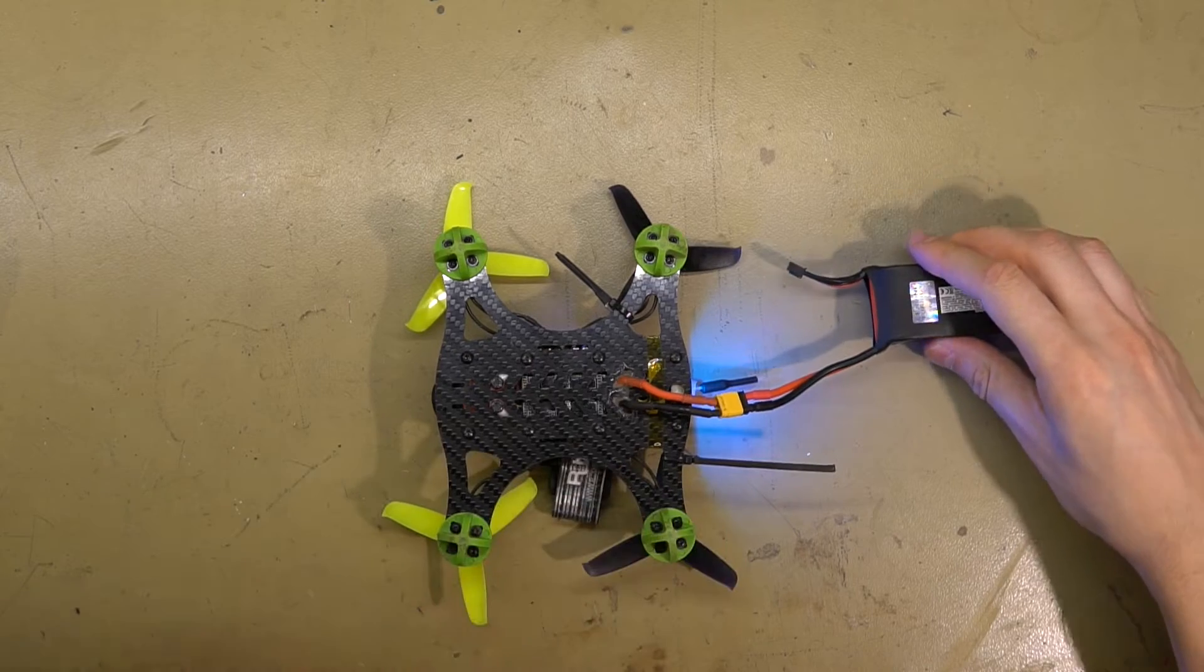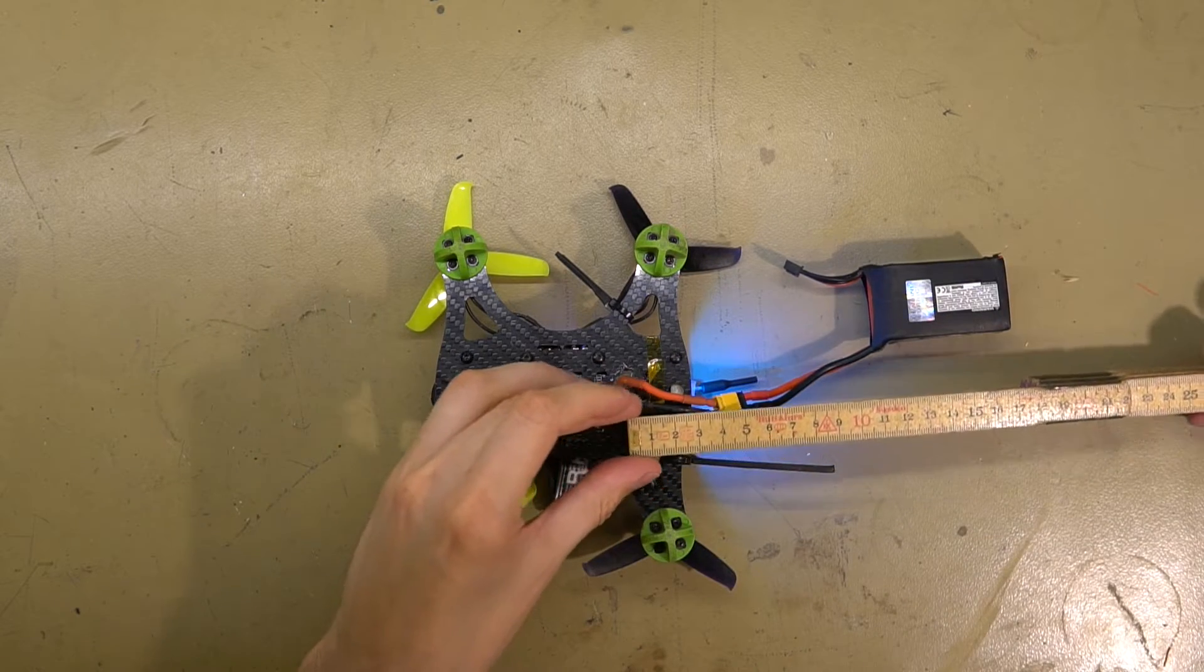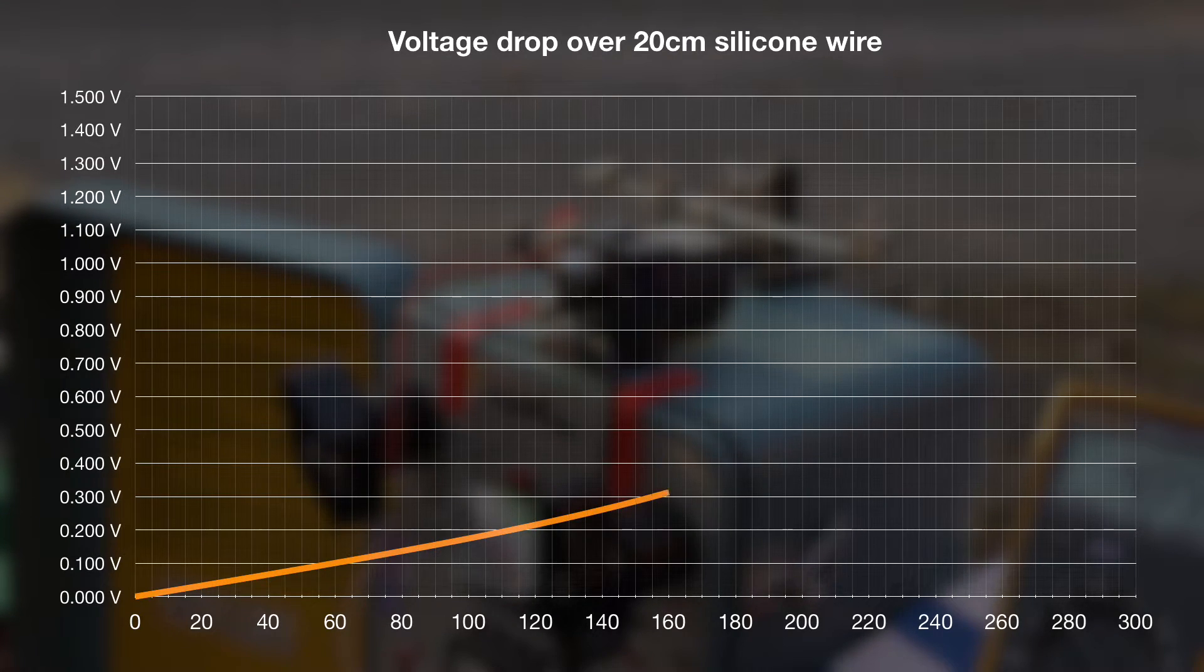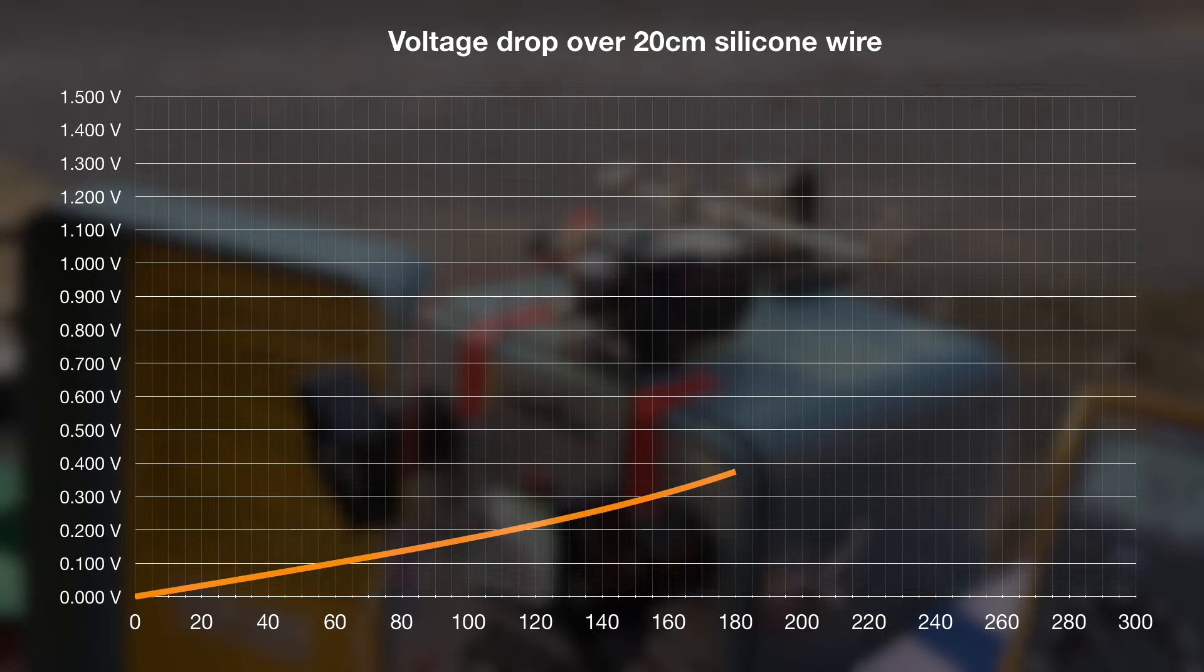That's 20 centimeters back and forth, so the equivalent of a 10 centimeter battery lead. For example, with a 12 gauge wire at our recommended 180 amps, you're dropping almost 0.4 volts.